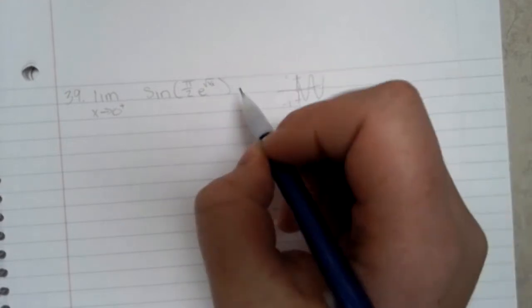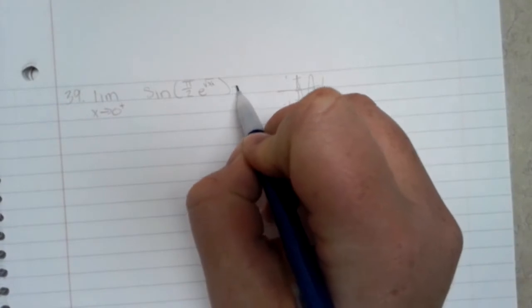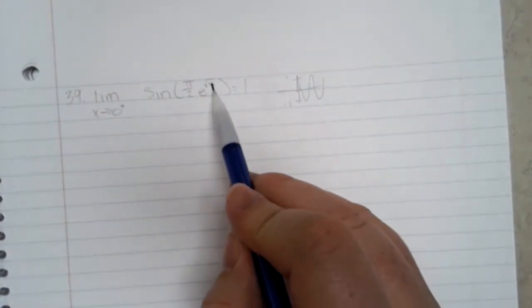And then the limit of this is 1. If you plug in 0 here, 0 is 0, e to the 0 power is 1.